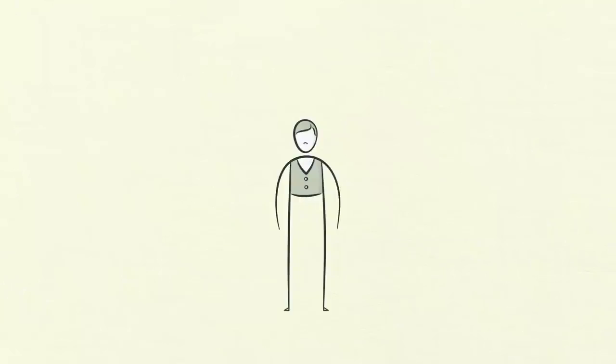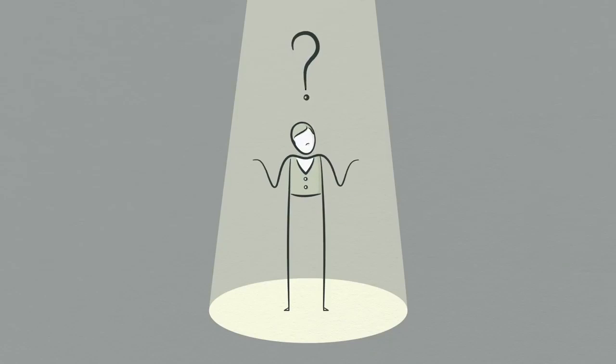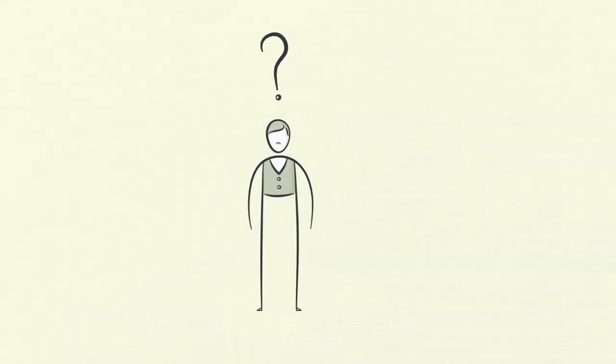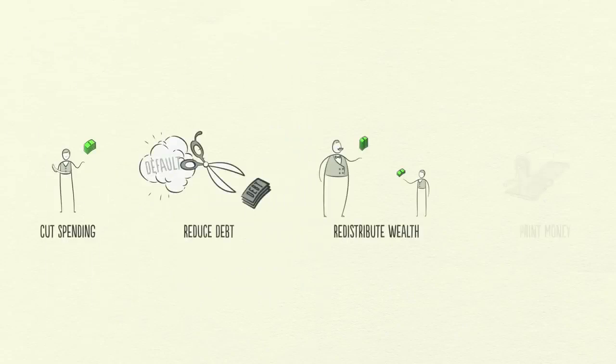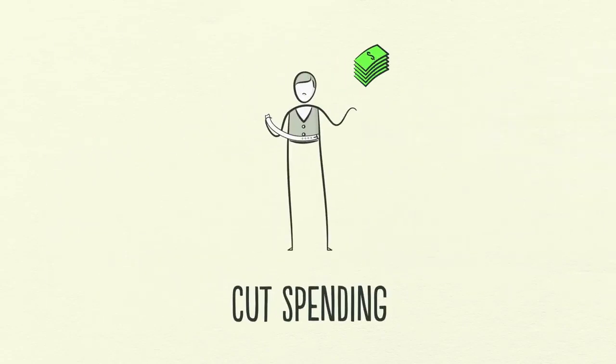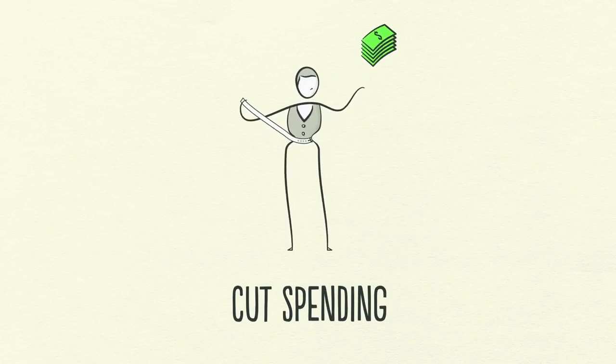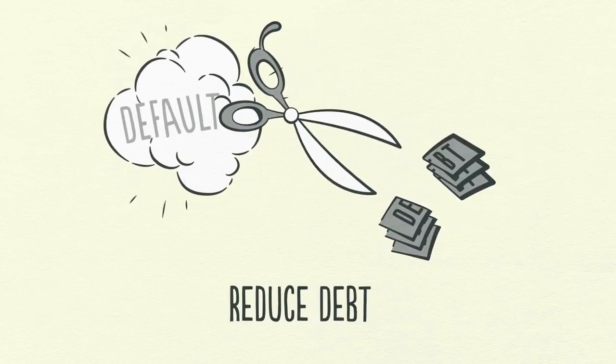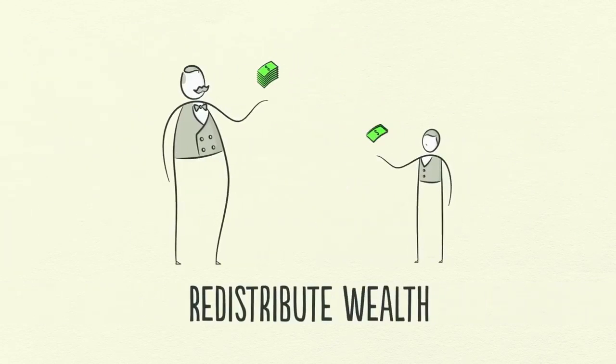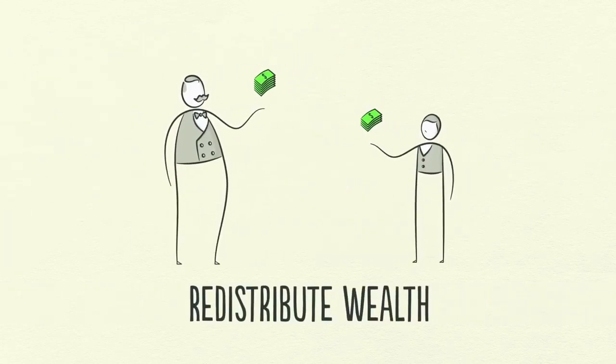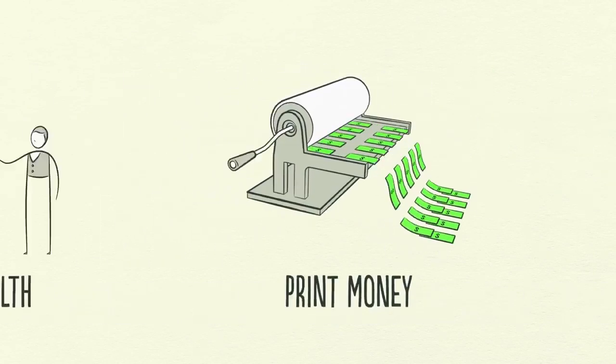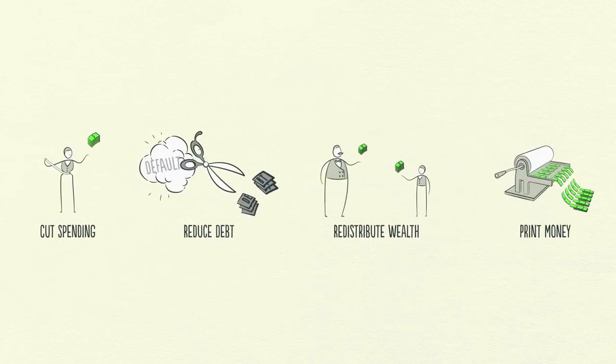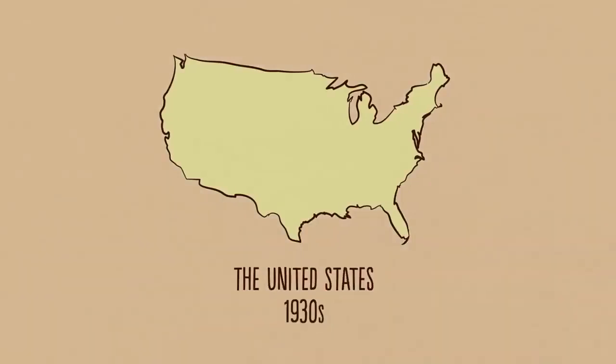So what do you do about a deleveraging? The problem is debt burdens are too high and they must come down. There are four ways this can happen. One, people, businesses, and governments cut their spending. Two, debts are reduced through defaults and restructurings. Three, wealth is redistributed from the haves to the have-nots. And finally, four, the central bank prints new money. Anyway, these four ways have happened in every deleveraging in modern history.